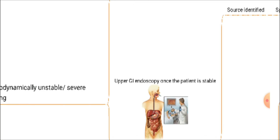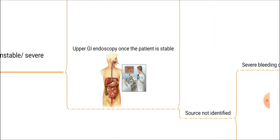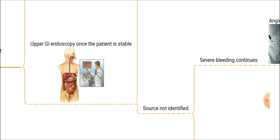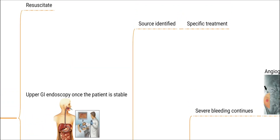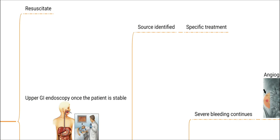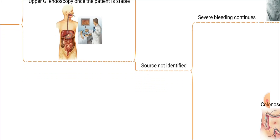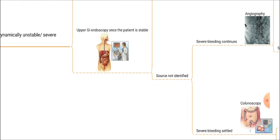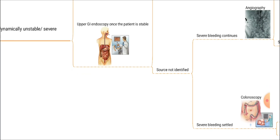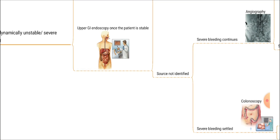After the patient becomes stable, the next investigation is an upper GI endoscopy. If any source is identified on upper GI endoscopy, we can do specific treatment. If no source is identified, upper GI pathologies causing PR bleeding are rare — not very common compared to lower GI pathologies — so most of the time the upper GI endoscopy may be normal.